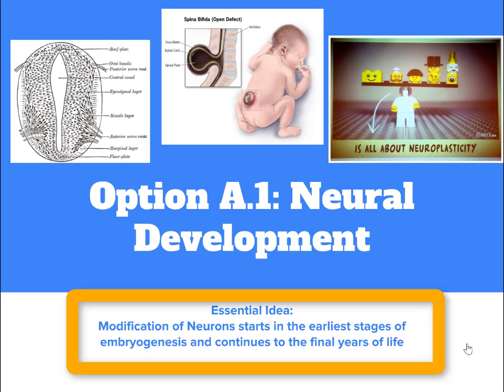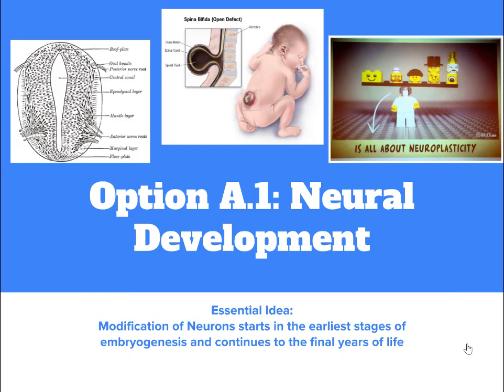The essential idea here is that modification of neurons starts in the earliest stages of embryogenesis and continues to the final stages of life. We are going to be focusing on how the nervous system starts to develop as the embryo develops and how it becomes the nervous system that we have come to learn about in 6.5. Onward and upward.